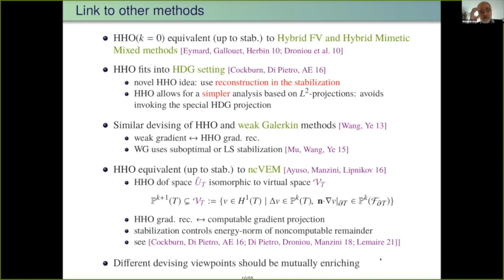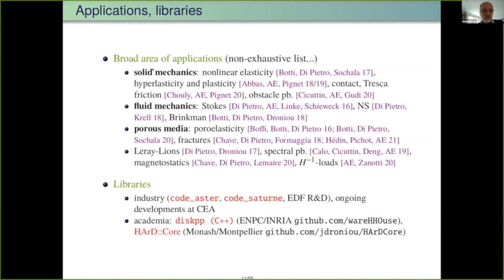There are many applications including solid mechanics, porous media, and other topics. There are libraries and industrial codes that already have HHO methods, especially within the French electric company EDF: Code Aster, which is used by the structural mechanics community, and Code Saturn, which is more for CFD. There are also ongoing developments at the Atomic Energy Agency and two libraries in more academic contexts.